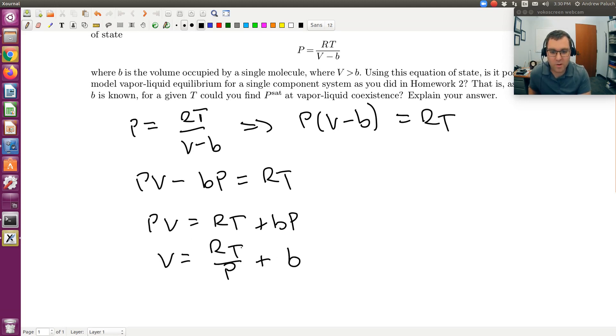And this is kind of cool. RT over P, this would be the molar volume of an ideal gas plus B, right? B being this actual space or the physical size, space occupied by a single molecule.